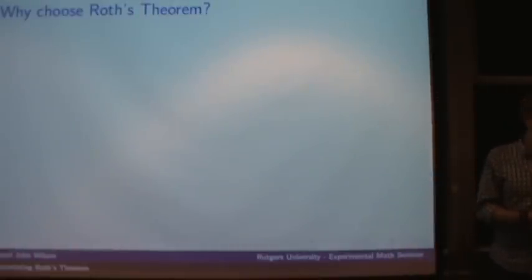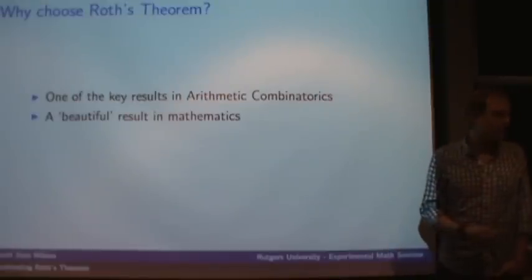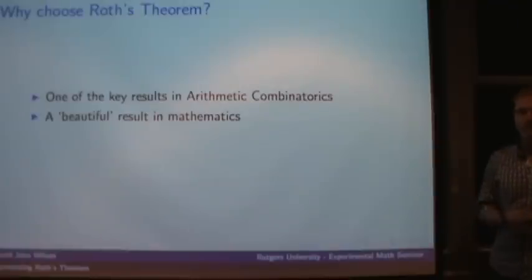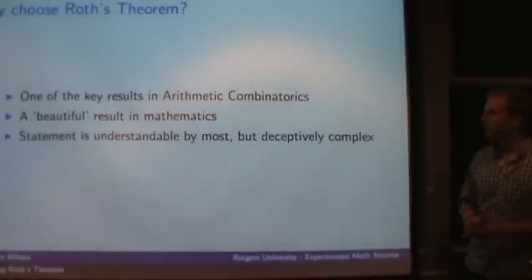So why pick Roth's theorem? To start, it's really one of the most influential results in arithmetic combinatorics. But it really launched a whole route into things like Szemerédi's theorem, things like the Green-Tao theorem, and different generalizations. It's also a beautiful result. It's very simple to state, but at the same time it's deceptively complex, and there's a lot going on underneath the background. So the whole idea was to take this simple statement and make everything going on in the background also simple and understandable.